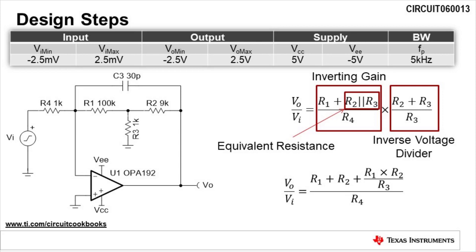The equation for Vo divided by Vi is the transfer function of the circuit. The transfer function is equal to R1 plus R2 plus R1 times R2 divided by R3 all divided by R4. This transfer function is derived using the equivalent resistance of R2 in parallel to R3 plus R1 divided by R4 then multiplied by the inverse of the voltage divider formed by R3 when looking from the output voltage to the input.